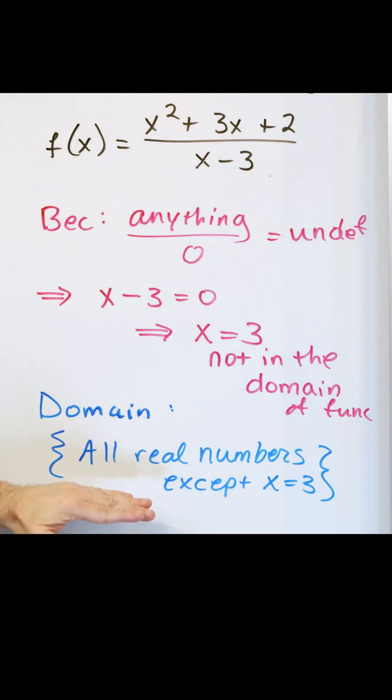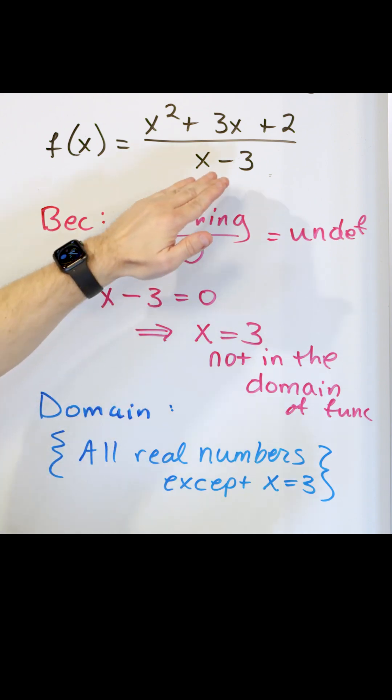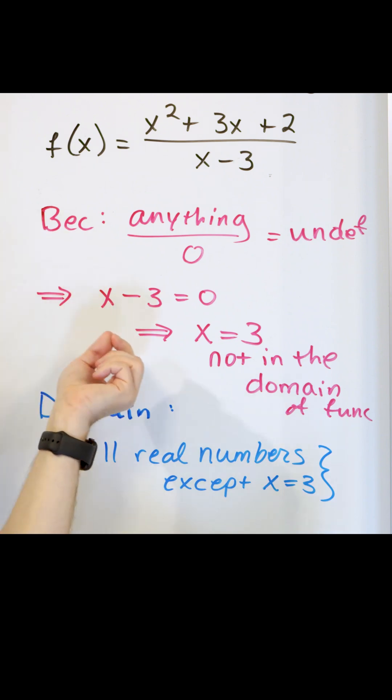So the domain of this function basically arises when I look at the denominator and I set the denominator equal to zero because that's going to give me the value of x that's not possible.